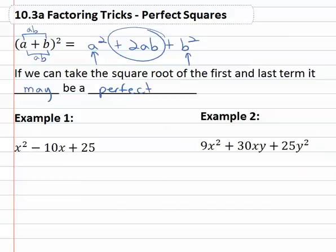For example, if we have x squared minus ten x plus twenty five, we say we can take the square roots of the first and last terms. The square root of x squared is x. The square root of twenty five is five.